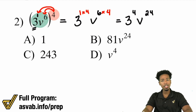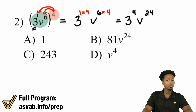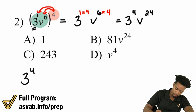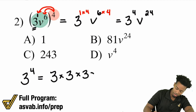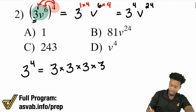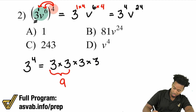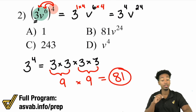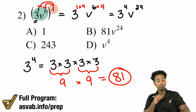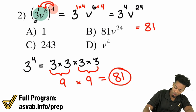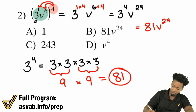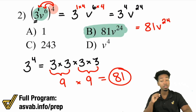If your answer choices don't show 3 to the power of 4, we have to simplify by expanding it. 3 to the power of 4 is 3 multiplied by itself 4 times. 3 times 3 is 9, 3 times 3 is 9, and 9 times 9 is 81. So the final answer is 81V to the power of 24. That is answer choice B.